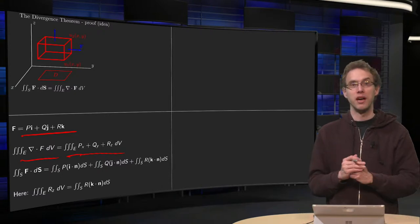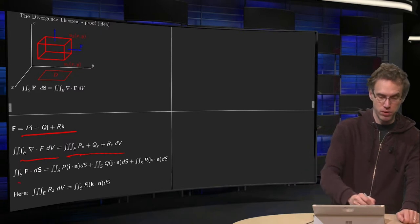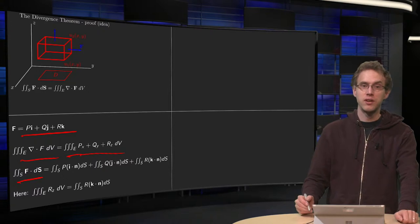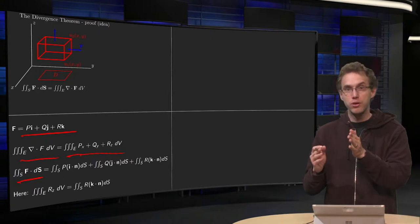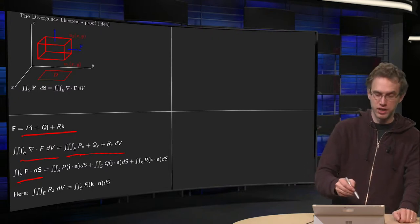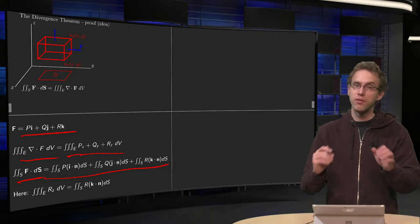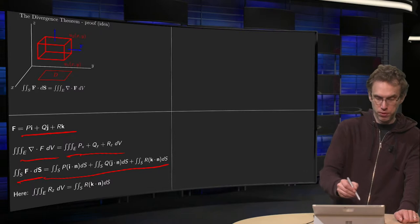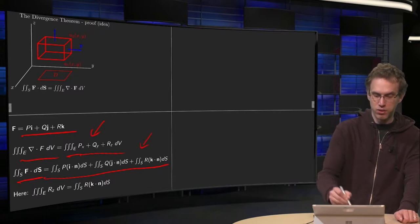And then we will write down what actually the double integral is of the vector field, so what the flux is. For that we also use F equals P plus Q plus R in the different directions, so that gives you, by definition, this integral if you write down what the surface integral becomes.